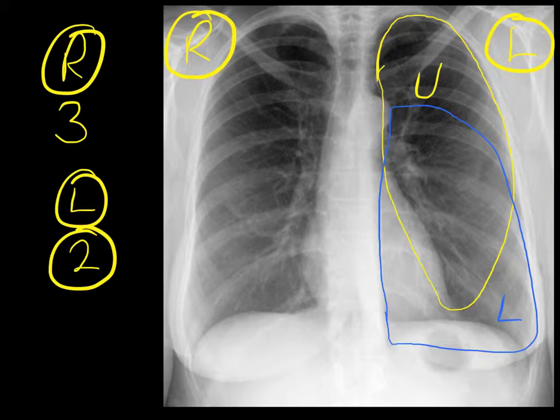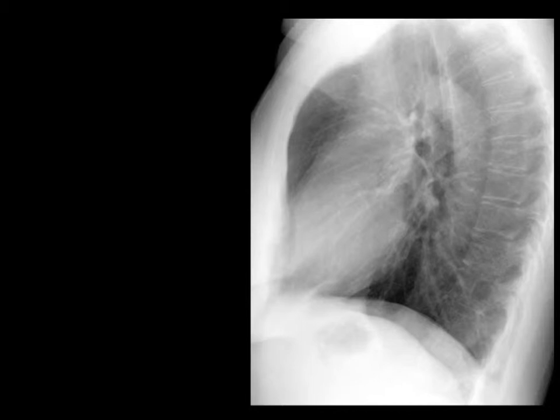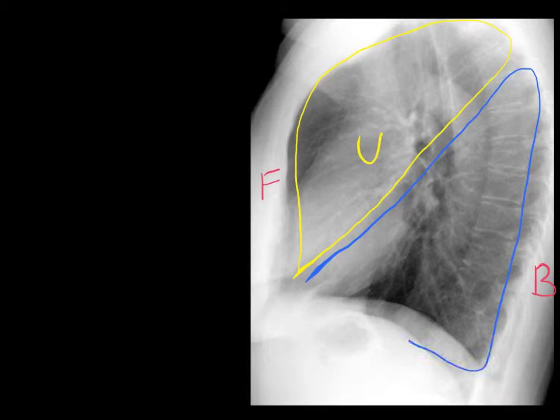This is the patient's lateral chest X-ray, and here we're looking from their side. This is the front of the patient, and this is the back of the patient. The left upper lobe lies at the front, like this, and the left lower lobe lies at the back, or posteriorly, like this.